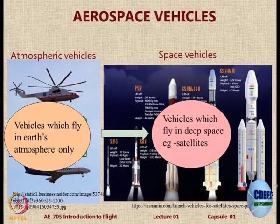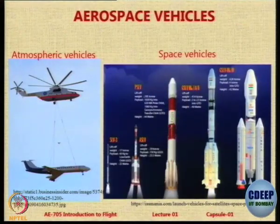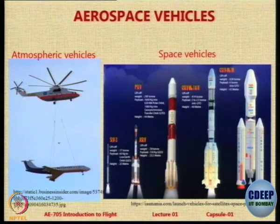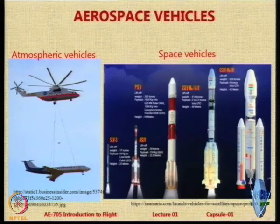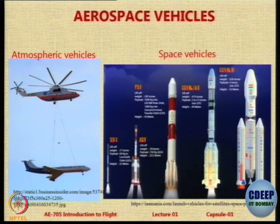Let us look at aerospace vehicles. There are two basic kinds. One kind operates in our atmosphere — basically the lower atmosphere — and could include helicopters and fixed-wing aircraft. In outer space, beyond about 100 kilometers, we look at space vehicles. Broadly speaking, up to 100 kilometers from earth can be considered part of the atmosphere, although aircraft never fly beyond 20 to 22 kilometers except for a few exceptions. Can you tell me which aircraft have flown beyond 20 kilometer altitude?